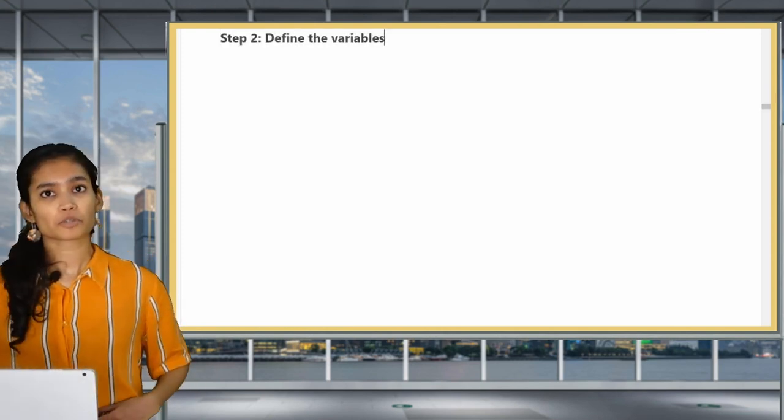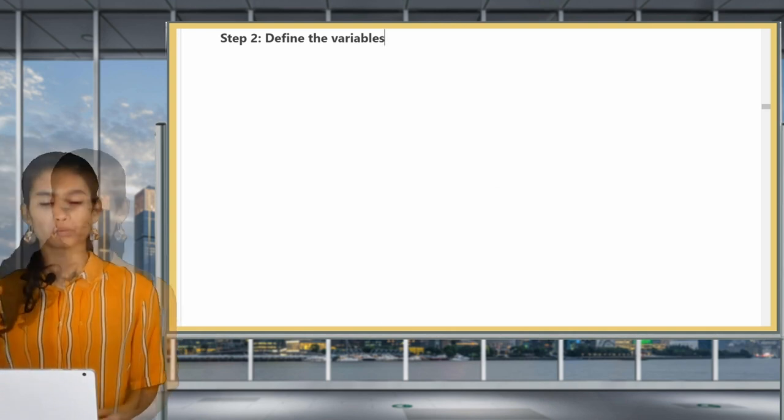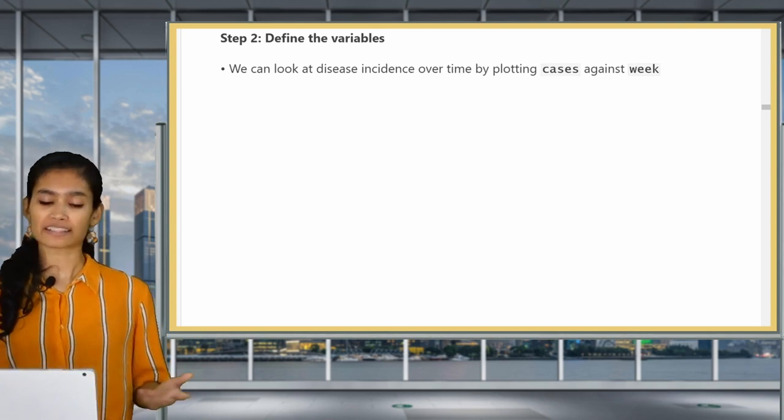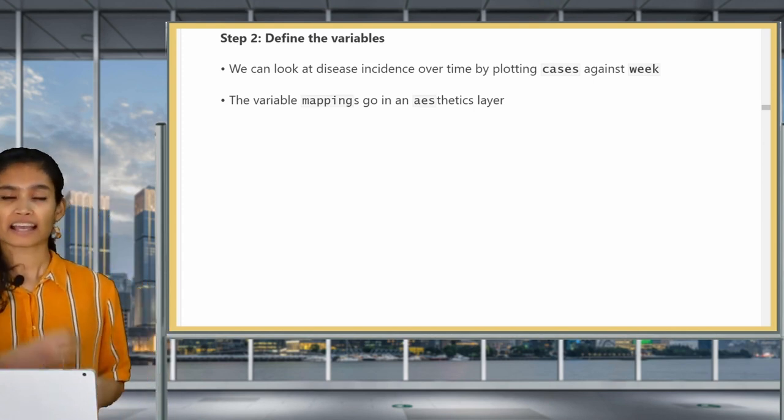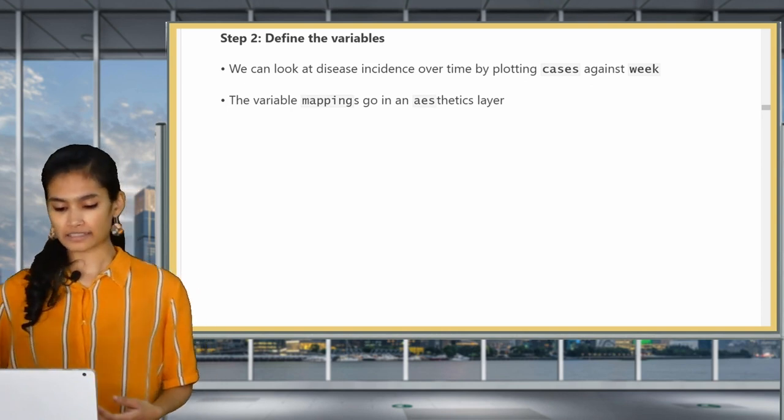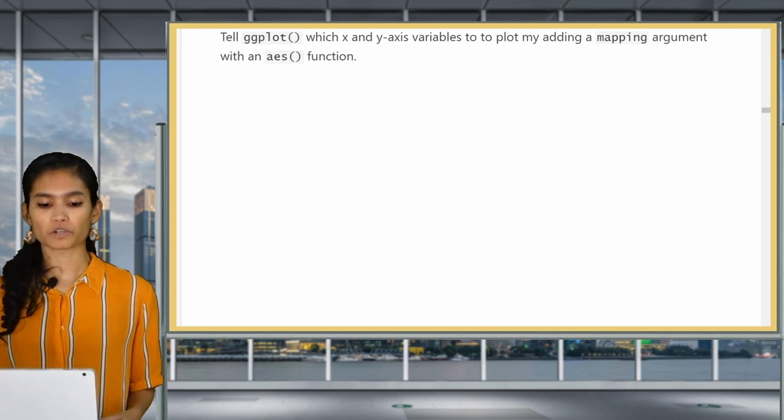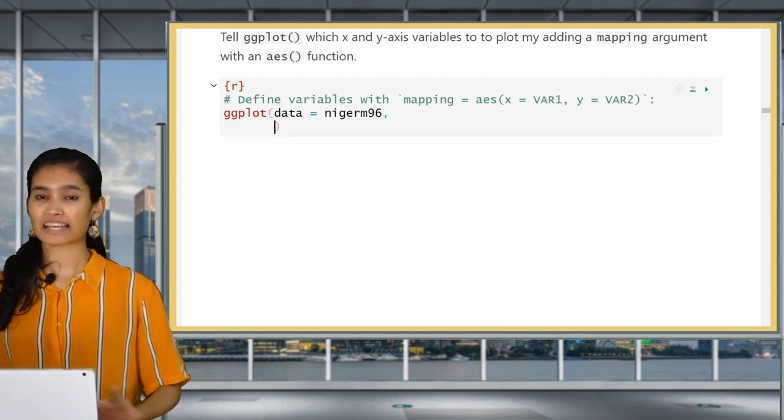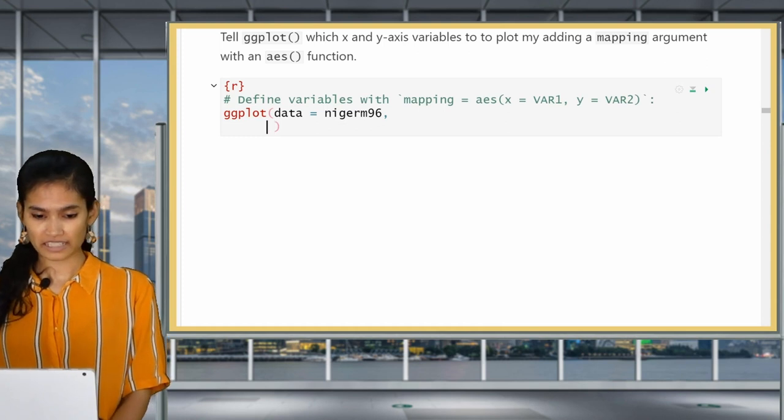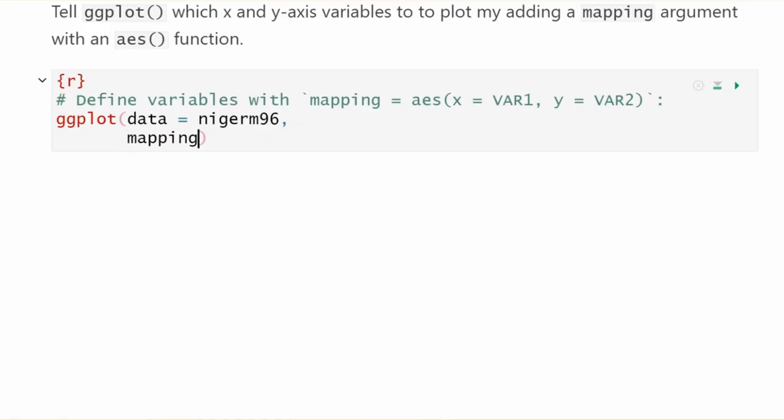The way you do this is by typing in data equals the data frame name that we want to use into the ggplot function. So data equals and the name of our data frame is niger-m96. Let's run this code and you'll see that again we get a blank. That's because we haven't given it the aesthetics for the geometries, the shapes to plot. Now we define our variables in step 2, which is to add the aesthetics layer. We can look at disease incidence over time by plotting cases against week. In ggplot speak, we are mapping cases to the y-axis and mapping the week variable to the x-axis.